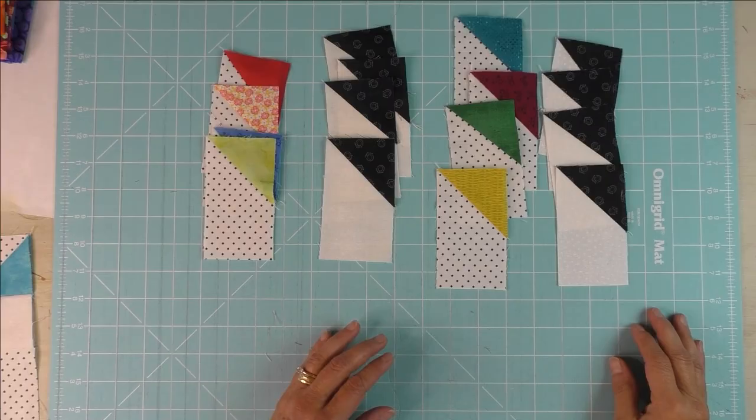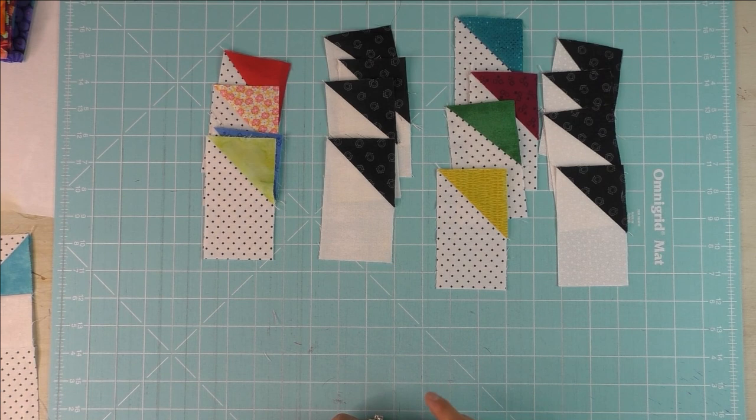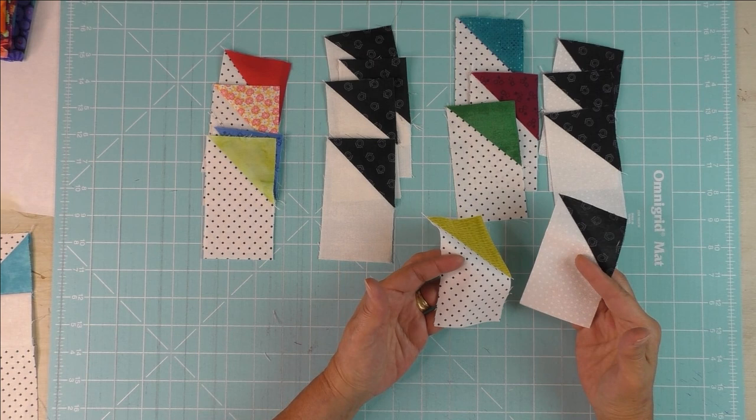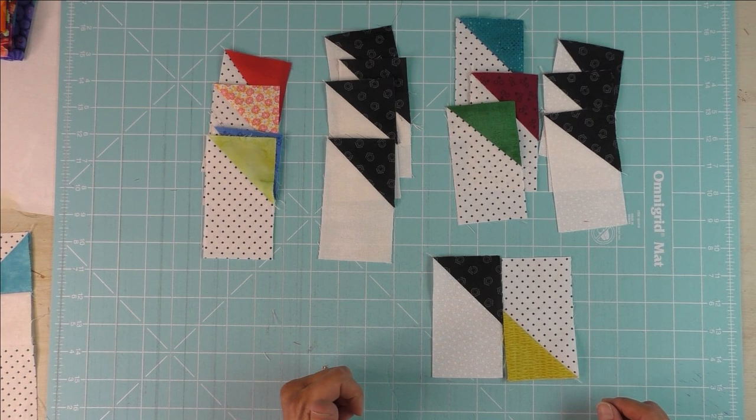Just cut those off and then these you'll press to the right as well so all your pieces will look the same. Now we're going to put the units together for a block. We're going to take one dark and one scrap chisel and flip them around like this.